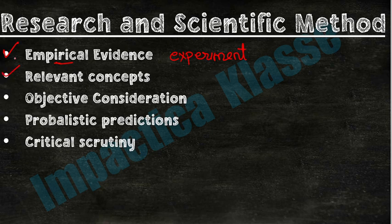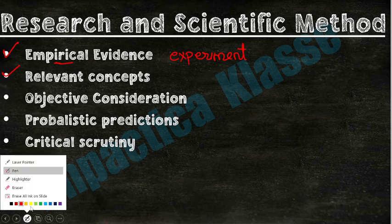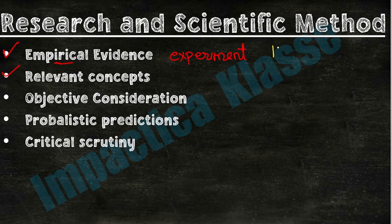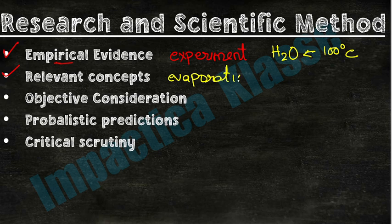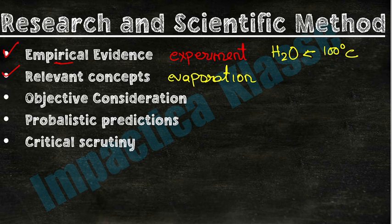Second is relevant concept. When we do a research, we develop it on a particular concept. For example, we are talking about how much temperature is applied on water so that it will evaporate — that is 100 degrees Celsius. The relevant concept we are using here is evaporation. Every research that we start will be based on a relevant concept, like evaporation or gravity. These have been studied by many researchers and proven to be true, so they are called relevant concepts.